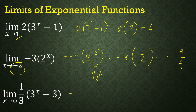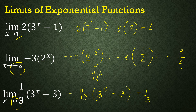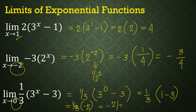In the other example, let x = 0: we have (1/3) × 3^0 - 3. Since 3^0 = 1, we get (1/3) × (1 - 3) = (1/3) × (-2), so the final answer is -2/3.